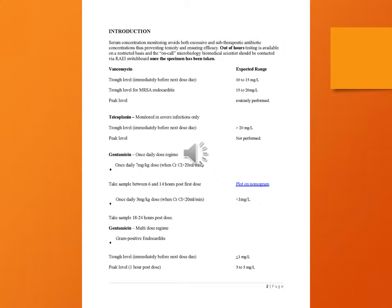Vancomycin: trough level immediately before next dose due. Trough level for MRSA endocarditis and peak level — take plan monitored in severe infections only. Trough level immediately before next dose due, plus peak level.